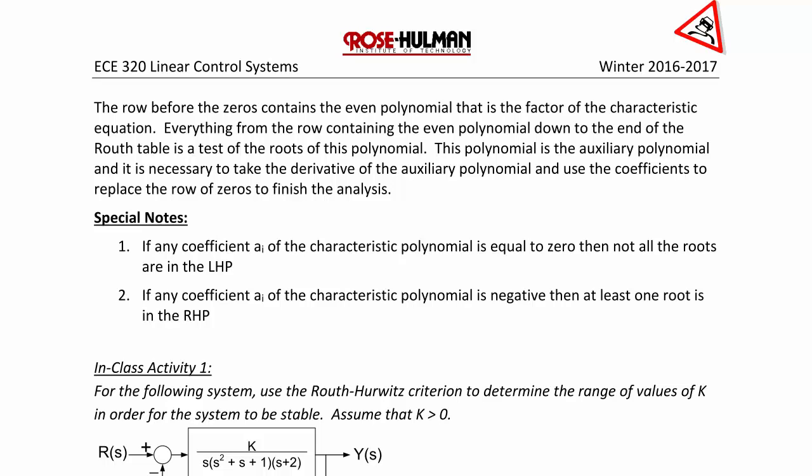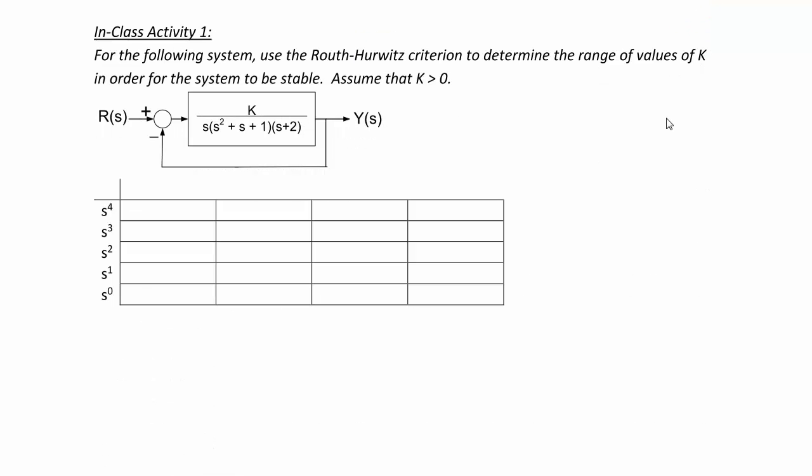Special notes: if any coefficient a_i of the characteristic polynomial equals zero, then not all roots are in the left-half plane, so you already know the system is not stable without creating a Routh table. Similarly, if any coefficient a_i is negative, then at least one root is in the right-half plane and you don't need the Routh table. Now let's do an example: use the Routh-Hurwitz criterion to determine the range of k values for the system to be stable, assuming k must be greater than zero.